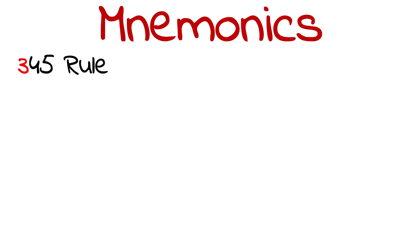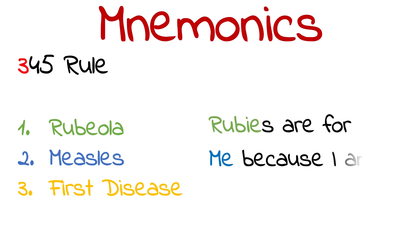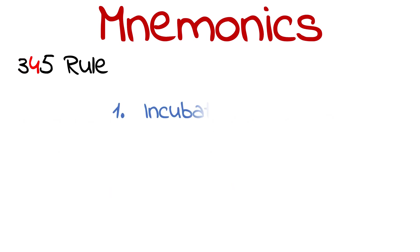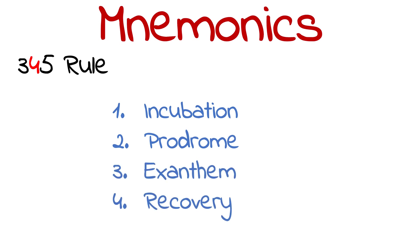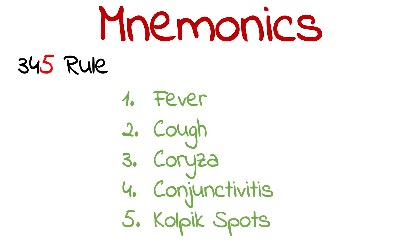Let's summarize using the 3-4-5 rule. Remember it has three names: rubeola, measles, and first disease — 'rubies are for me because I am number one.' It has four stages of infection: the incubation period, the prodrome, the exanthem, and the recovery phase. Finally, there are five signs and symptoms of the prodrome: fever, cough, coryza, conjunctivitis, and Koplik spots. They occur in this order — and if you look at the first letter of each symptom, it really helps you remember them.